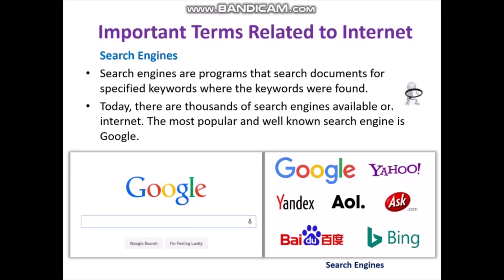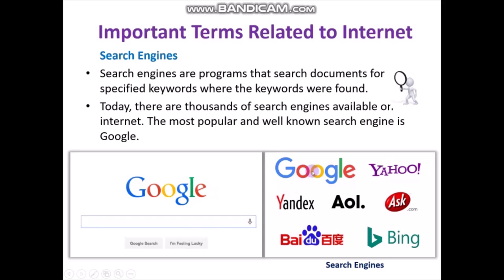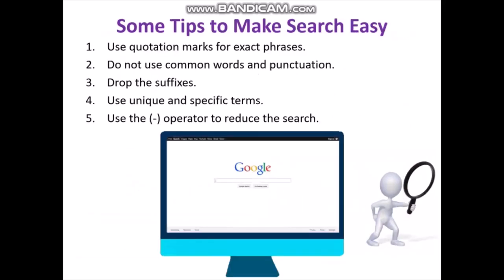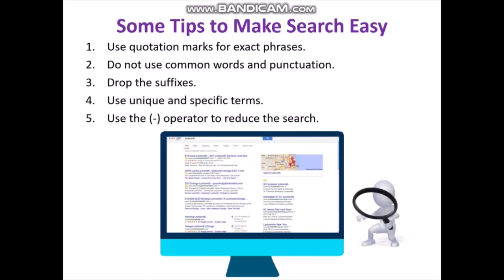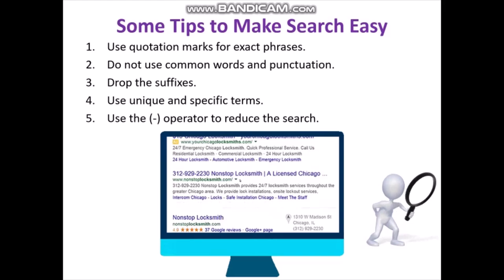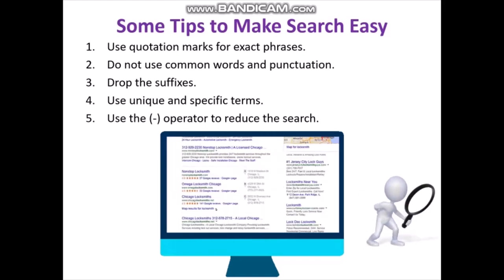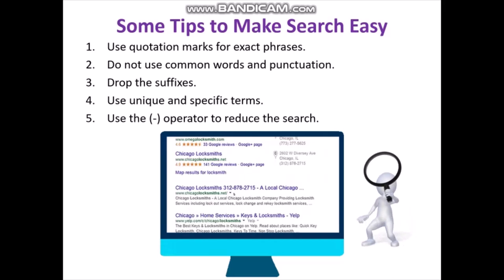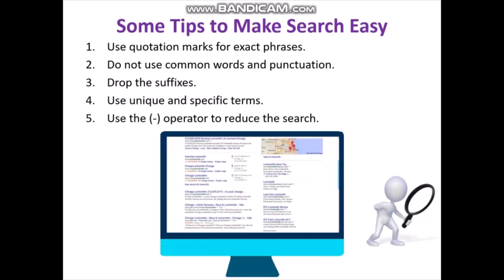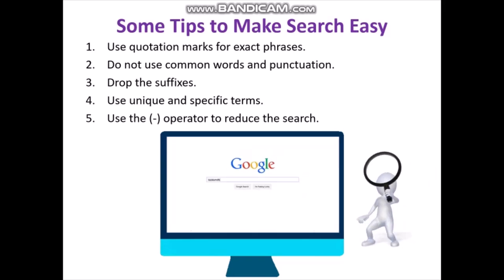Search engines are programs that search documents for specific keywords and return results where those keywords were found. Today, there are thousands of search engines available on the internet. The most popular and well-known search engine is Google. Other search engines include Yahoo, Ask.com, and Bing. Some tips to make searching easy: use quotation marks for exact phrases, do not use common words and punctuation, drop the suffix, use unique and specific terms, and use the subtraction operator to narrow the search.